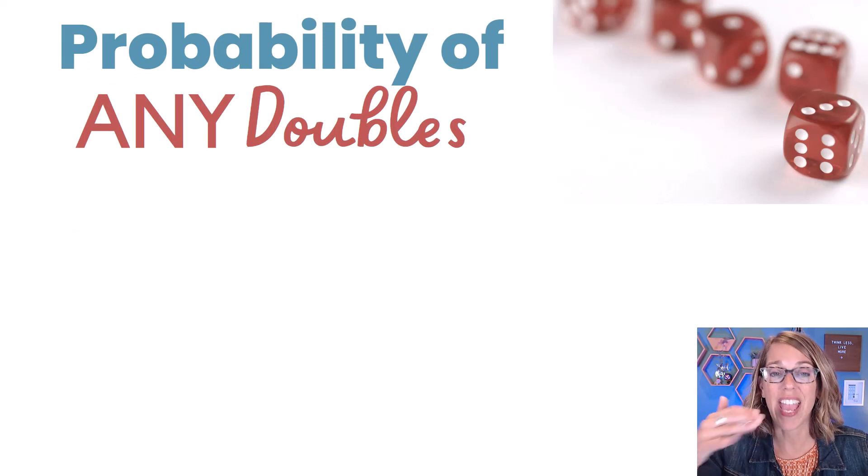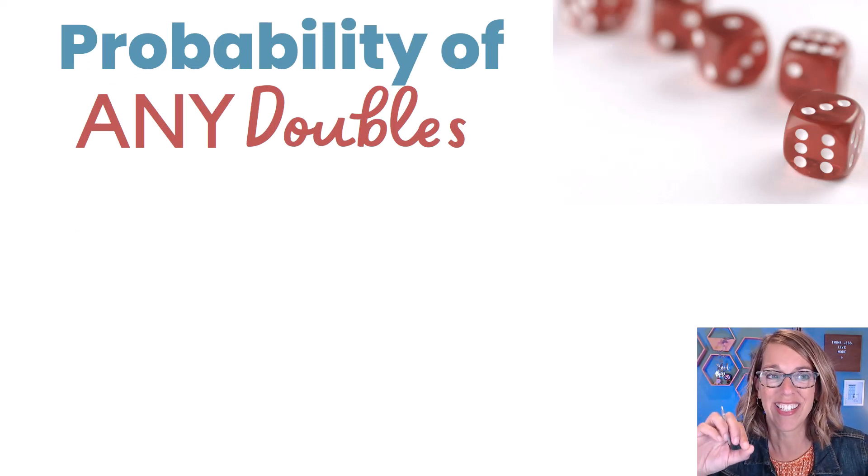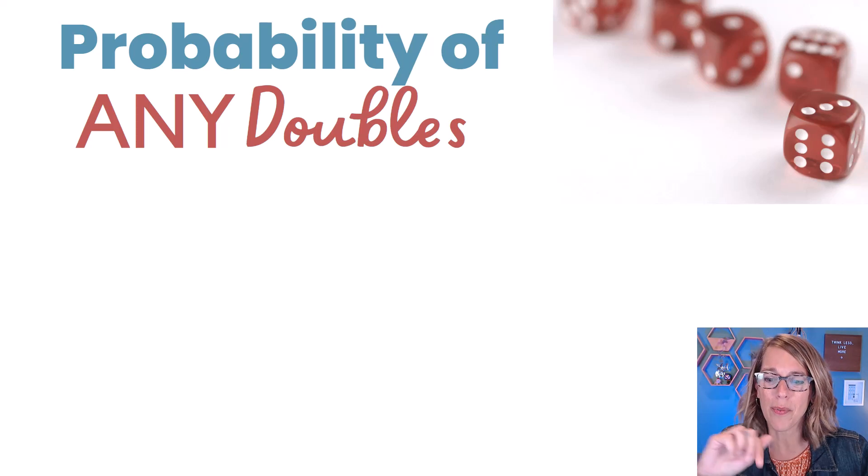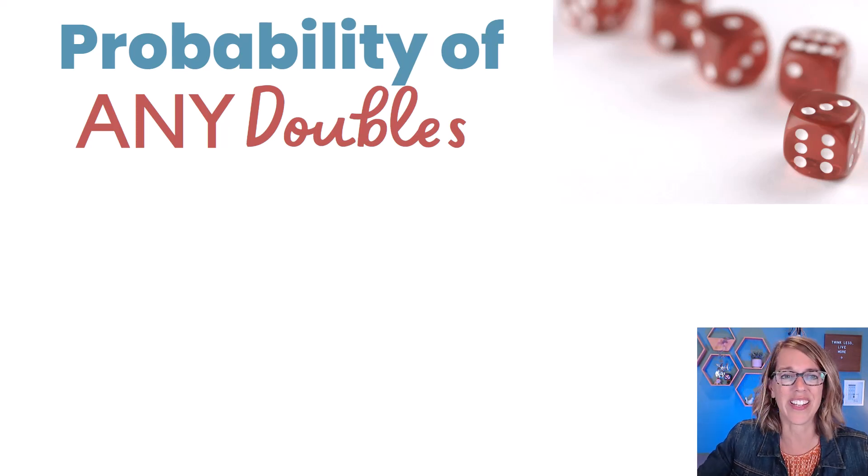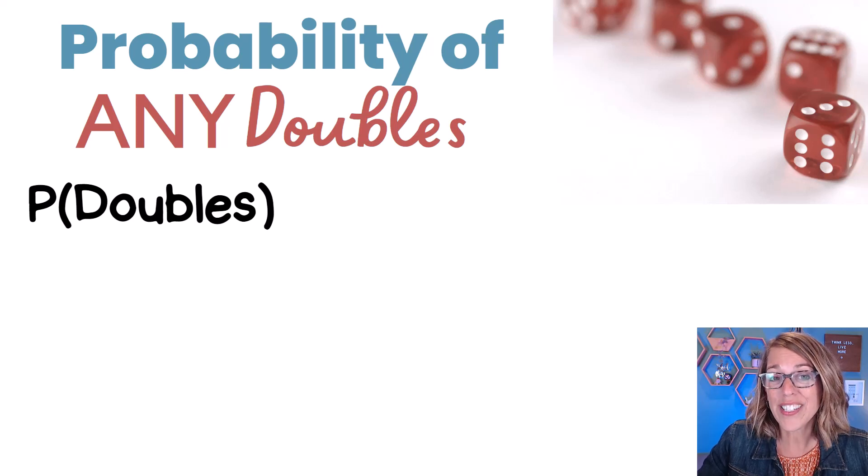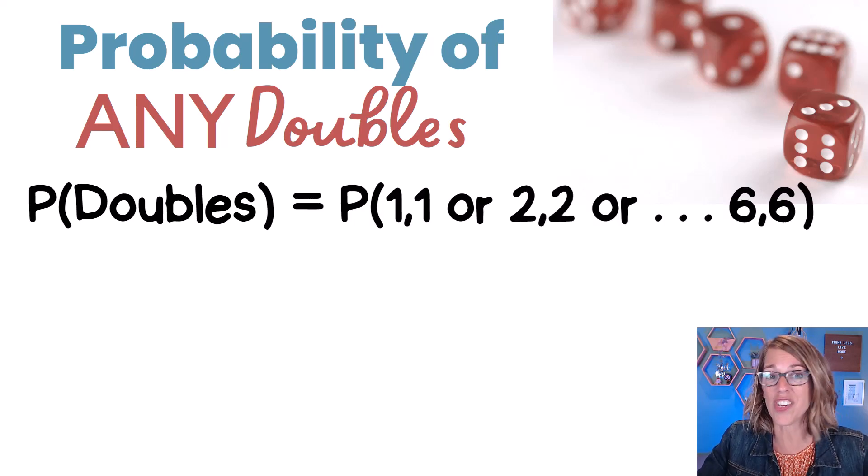Now we're ready to do the probability of any doubles. I'm not sure if that's the best English, but you know what I mean, of getting double ones or double twos or double threes. So as we're doing that probability of getting any doubles, we've got several different cases. So like I mentioned, double ones or twos or threes, fours, fives or sixes.